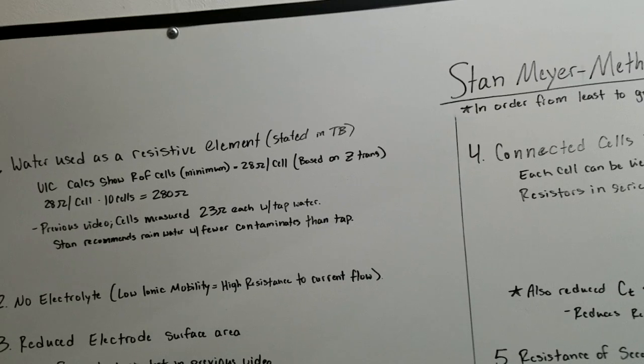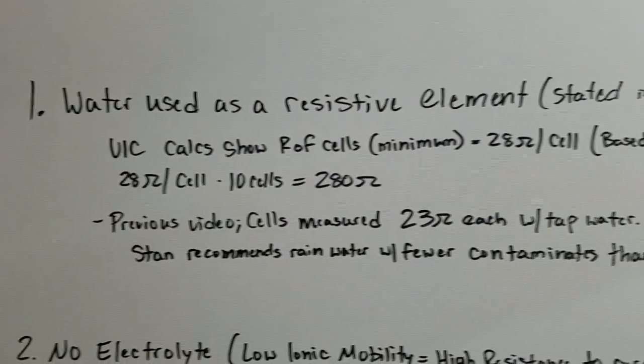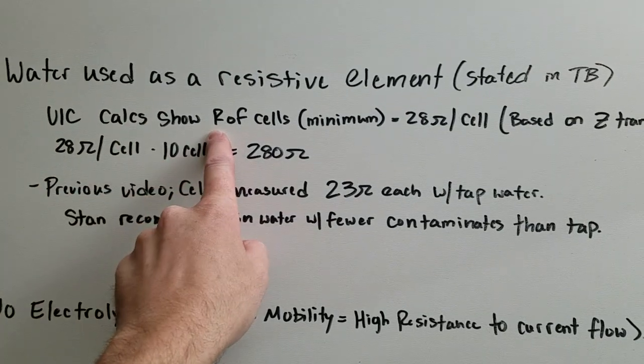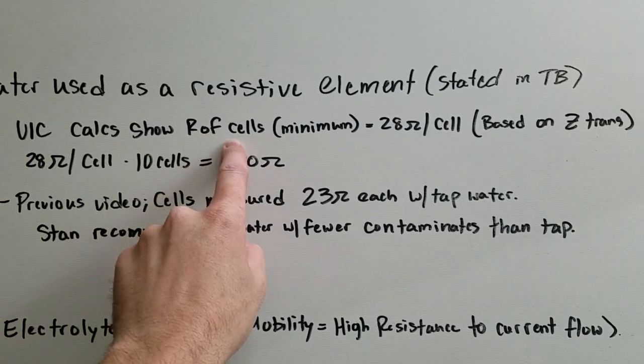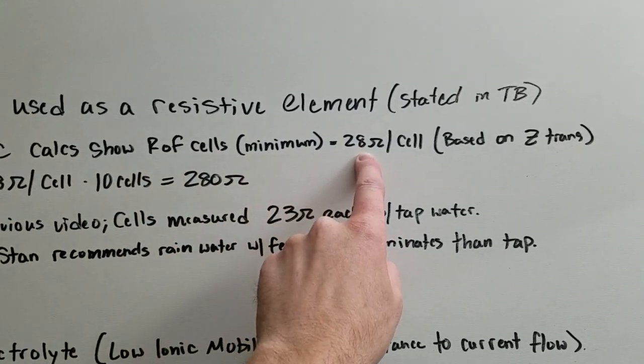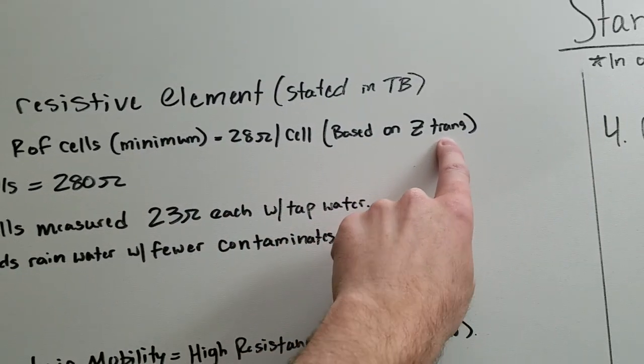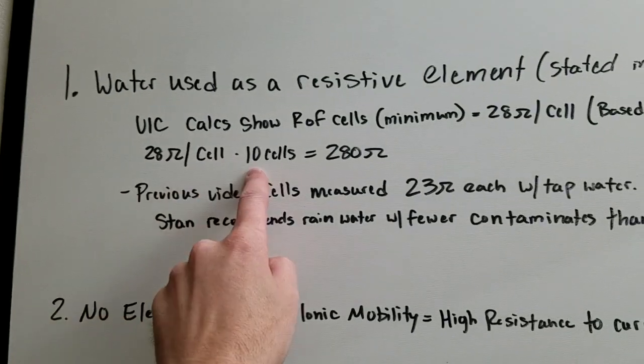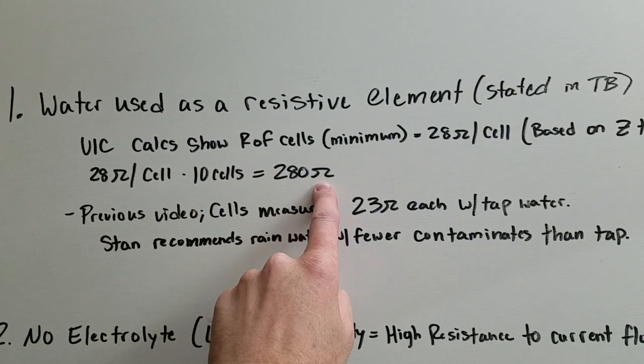So first off, stated in the technical brief, Stan Meyer used water as a resistive element. If you do the calculations of the VIC, you find the cell's minimum resistance should be about 28 ohms. That's based on the impedance transformation of the transformer. So 28 ohms per cell times 10 cells gives you 280 ohms.